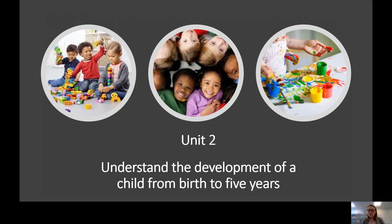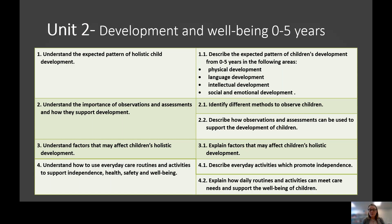Unit 2 is understanding the development of children from birth to 5 years. We look at that pattern of expected development — what do we expect children to do at certain ages between 0 to 5? We also look at why it's important to observe children and what milestones they're hitting, the factors that would affect them, and how we can promote independence in young children between the age of 0 to 5.